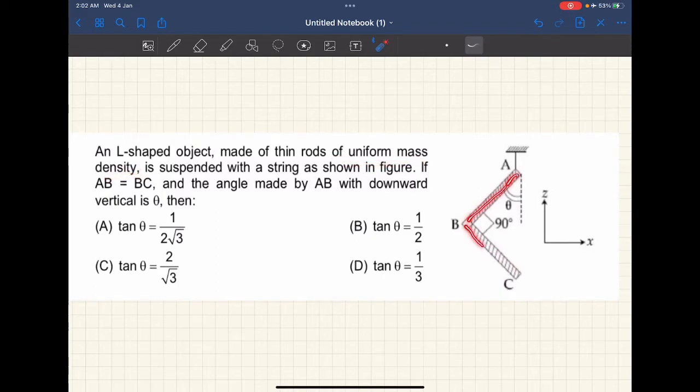The length AB and BC are equal which means they are of the same mass. So if I say the mass of this is m then this would be m as well, and we need to find the tangent of this theta.